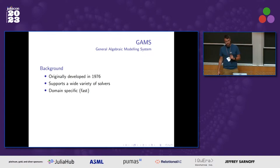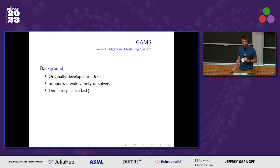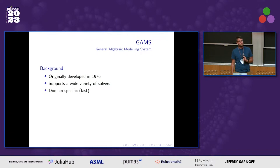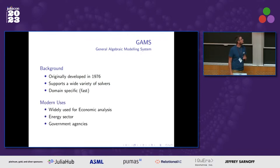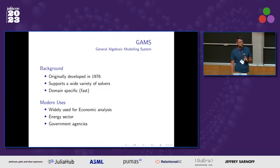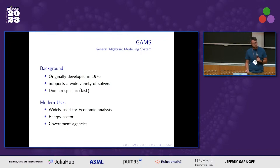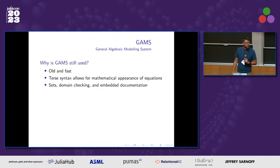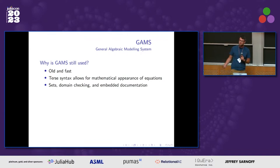I want to talk a little bit about GAMS because my whole thing is replacing GAMS. It's old — developed in 1976 — has a huge variety of solvers, I think it supports far more than JuMP. It is incredibly fast at creating equations and setting up constraints. It's widely used for economics, the energy sector, and governmental uses — very popular software. It is closed source and costs quite a bit, but for these kinds of things cost usually isn't the limiting factor. It's used because it's fast and it's old — kind of a self-fulfilling prophecy: people use it because people use it.